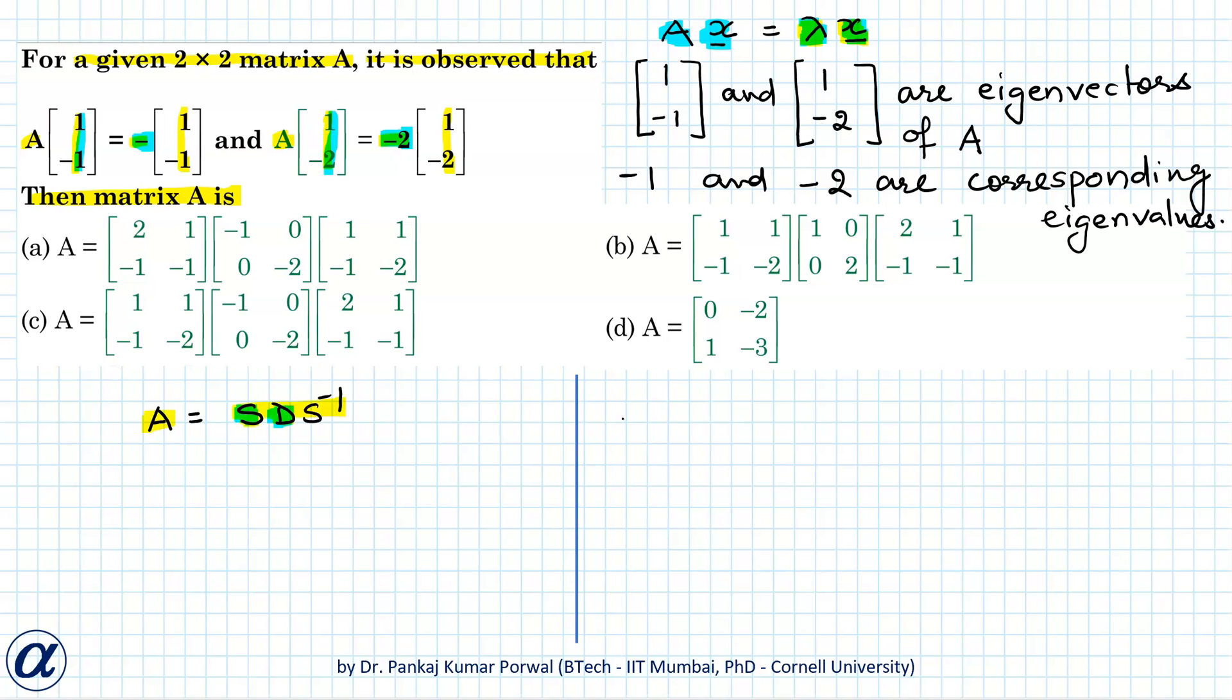So my matrix S will be equals to [[1, 1], [-1, -2]] and correspondingly the diagonal matrix D will be [[-1, 0], [0, -2]]. And I also need to find S inverse, but because S is just 2 by 2 matrix, S inverse I can quickly write.